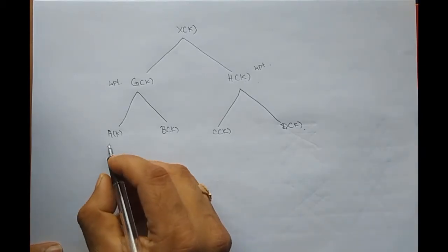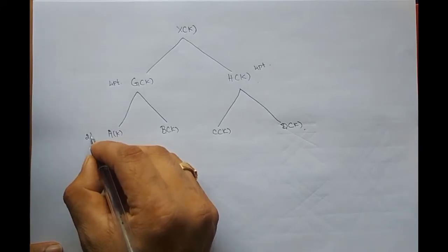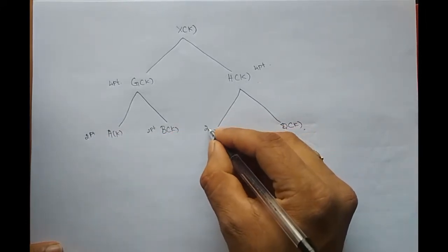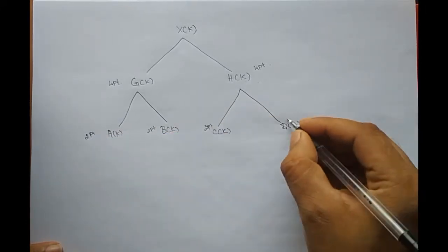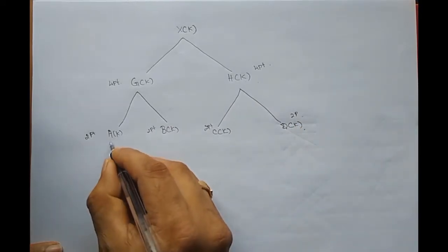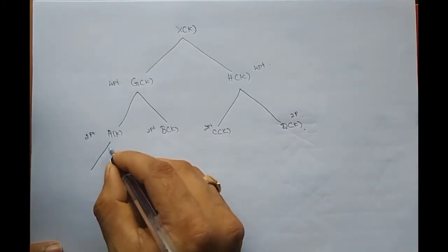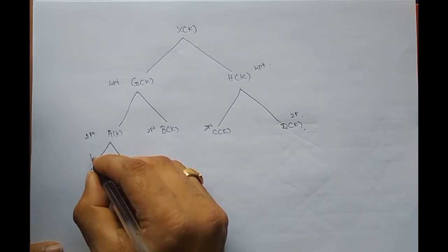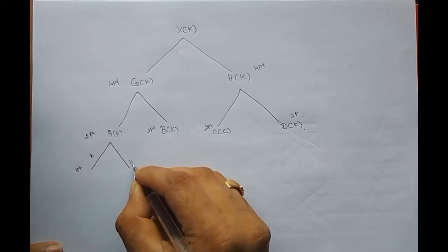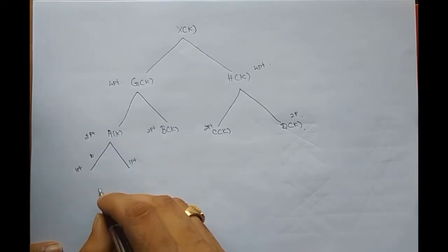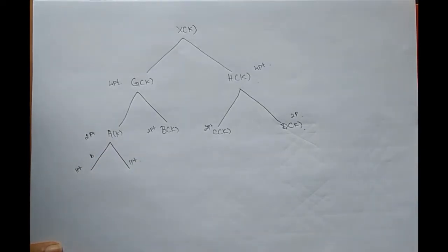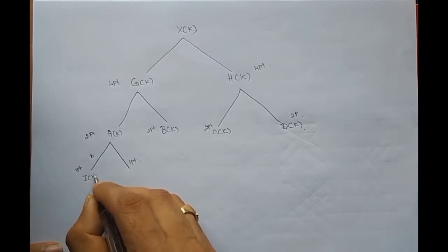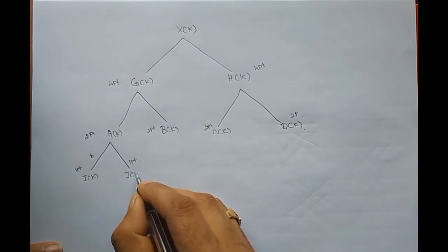One last decomposition: this is 2-point, this is 2-point, this is also 2-point, this is also 2-point. Now I have to again decompose each of these into 1-point DFT. We shall call these as i of k and j of k.